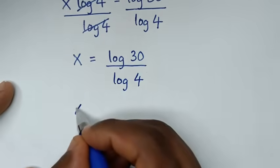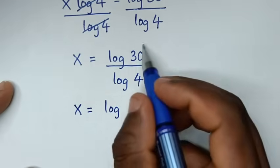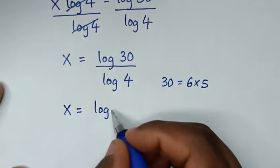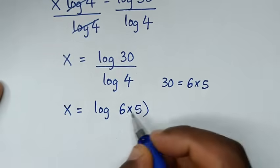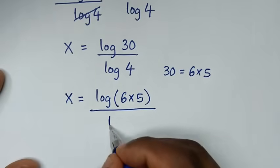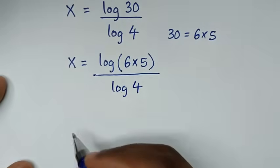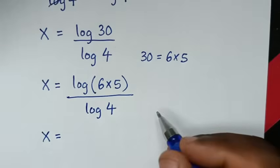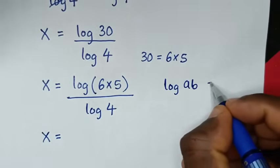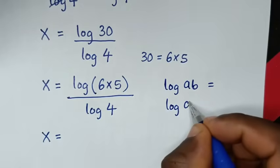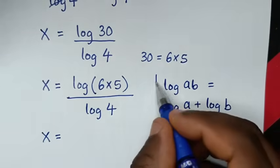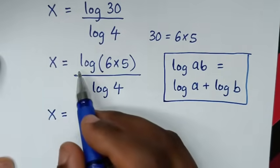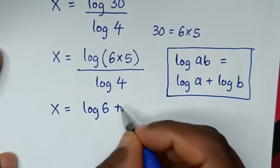Then in the next step, x is equal to log of 30 over log of 4. From 30: 30 is equal to 6 times 5, so log of 30 is log of 6 times 5, all over log of 4. Now log of 6 times 5 is in the form log(a × b) = log a + log b, so by applying this form it will be log of 6 plus log of 5, over log of 4.